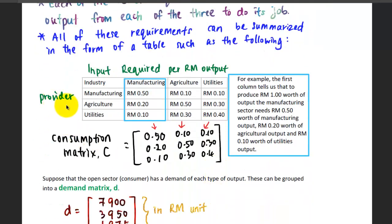We have the provider here and the manufacturing here. The column refers to the input required per RM output. Let's look at the first column, the manufacturing.